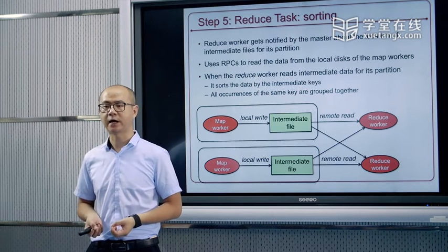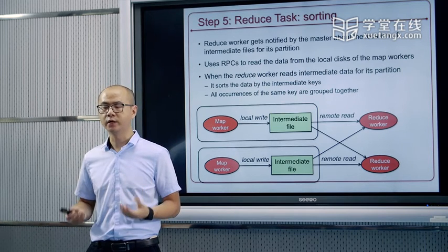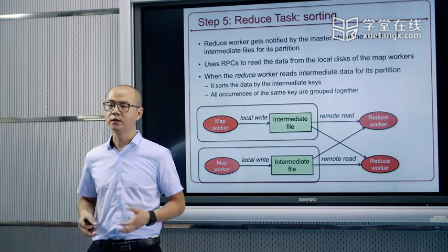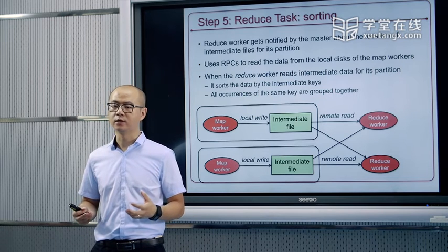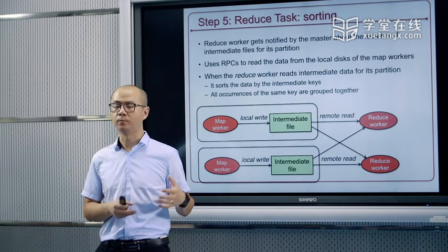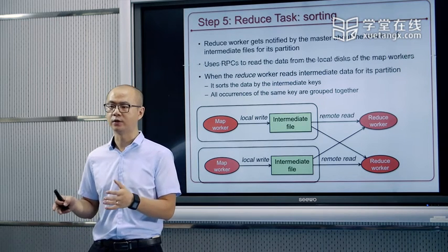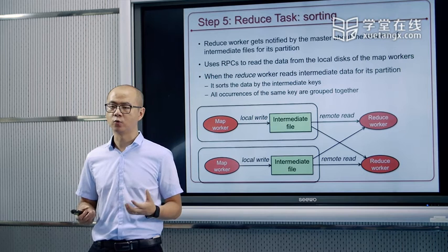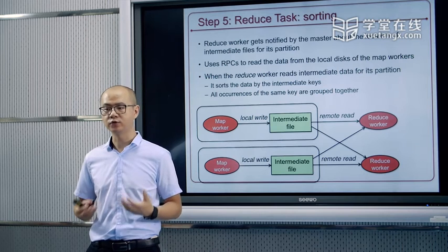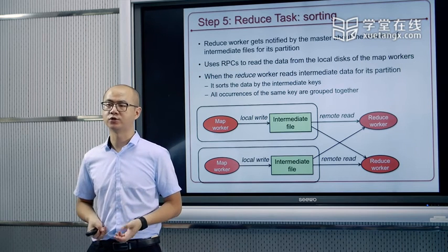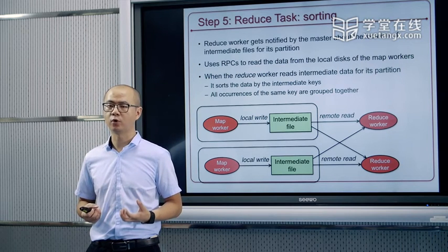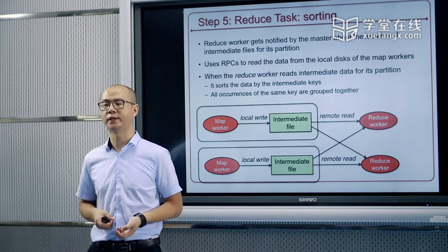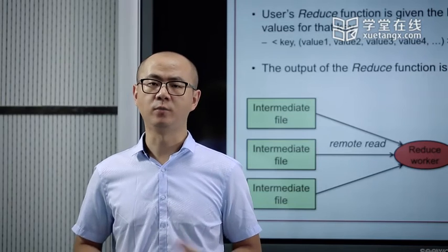这会带来网络的开销。数据需要从不同的mapper worker的磁盘经过网络、经过交换机最终传输到处理它的reducer节点上去。这个shuffle过程在今天实际的系统中是开销比较大的。大量的研究工作也是在这一块展开，怎样降低从mapper到reducer的shuffle过程、怎样使这个过程尽可能高效，是今天对MapReduce这类系统优化的一个关键点。